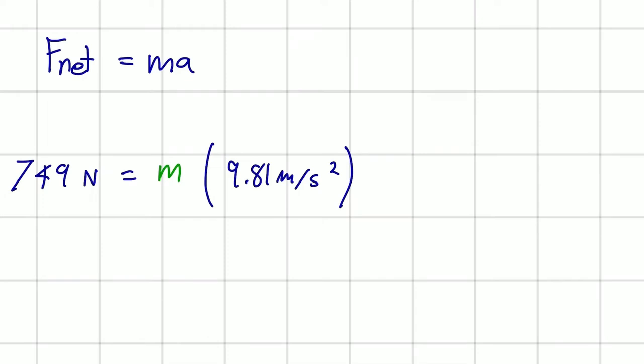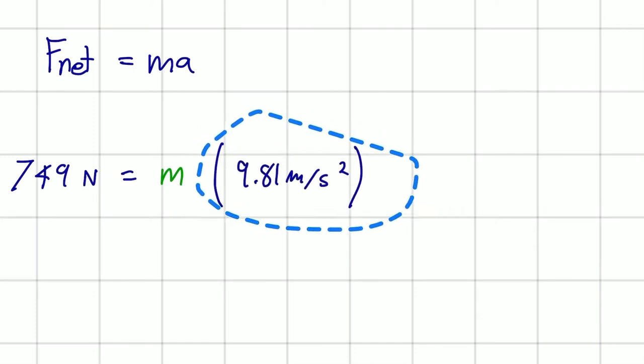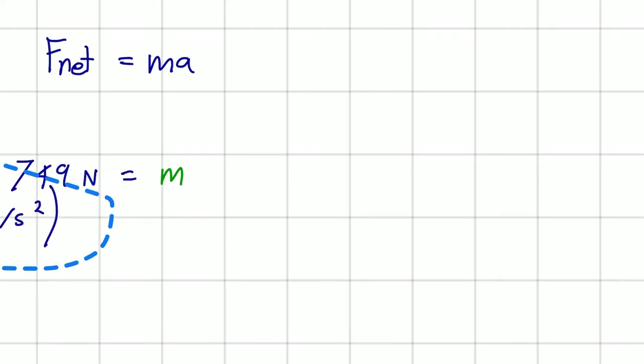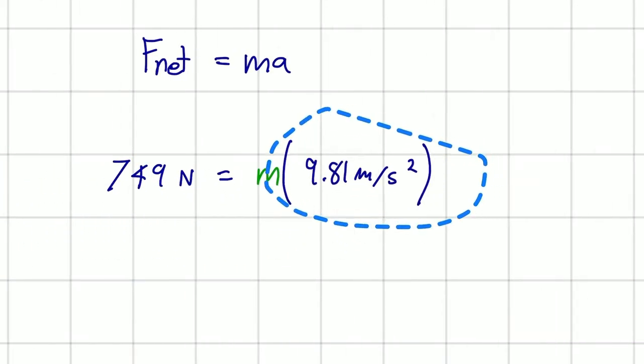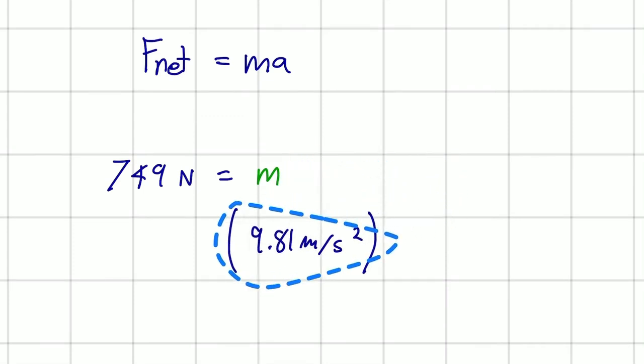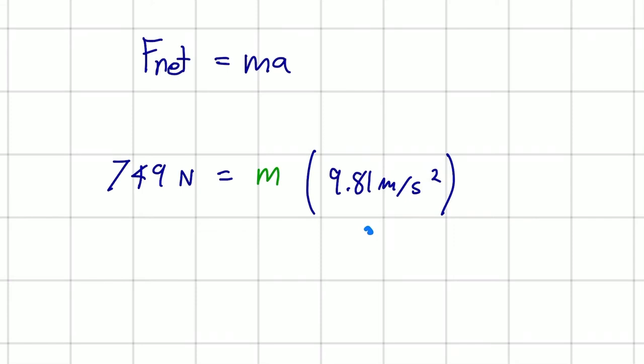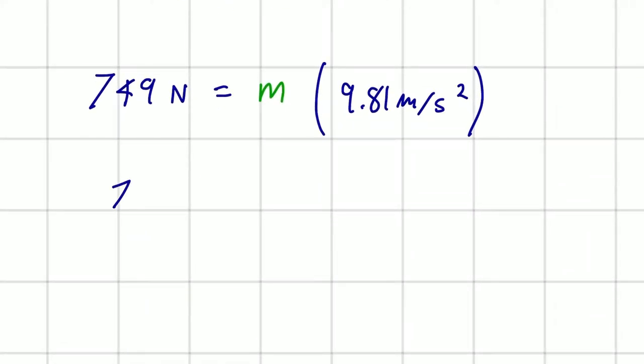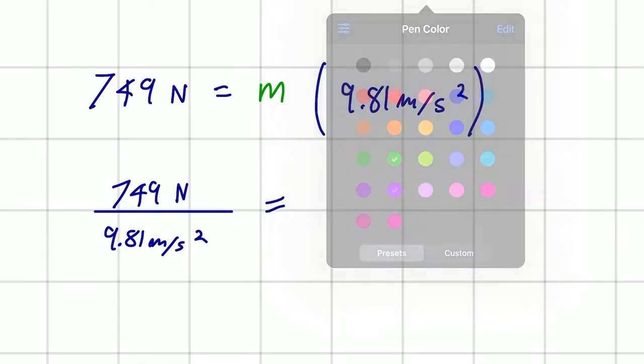So now all we have to do is isolate. We want to isolate our unknown. This value here, we're going to have to bring to the other side of the equation. And since here it's a multiplication, when we bring it to the other side, it's going to be a division. So 749 newtons divided by 9.81 meters per second squared, and that is equal to M.